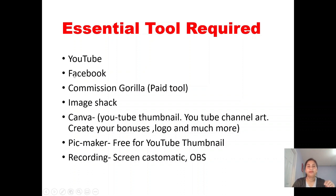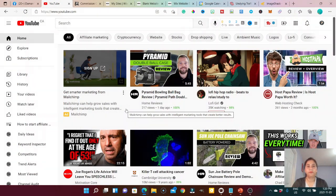The number one tool is YouTube and the second free organic traffic source for affiliate marketing is Facebook. I think anybody can start with these two tools. In later videos I'll talk about how to start your YouTube channel from scratch. On YouTube, what I do is make review videos about products I'm reviewing and add my affiliate links in the YouTube description.